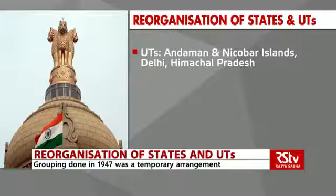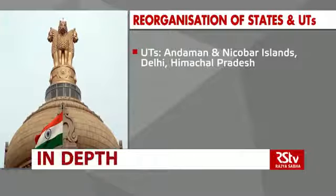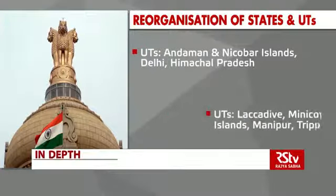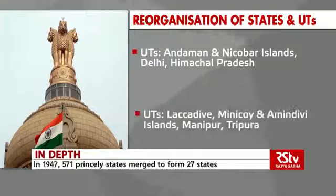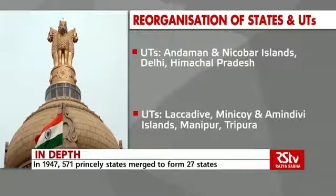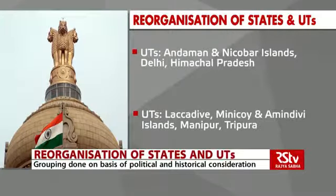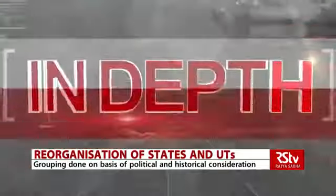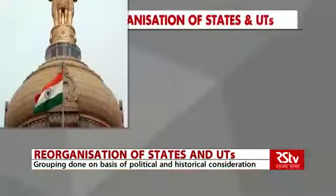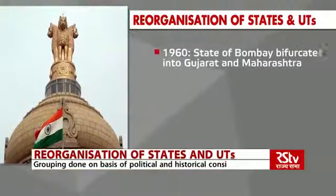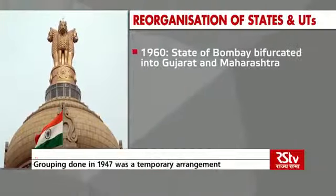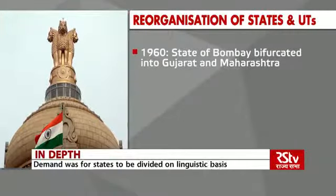The six union territories were Delhi, Himachal Pradesh, Lakshadweep, Minikoy and Amindivi Islands, and Manipur and Tripura. In 1960, the state of Bombay was bifurcated into Gujarat and Maharashtra after days of violence and agitation.